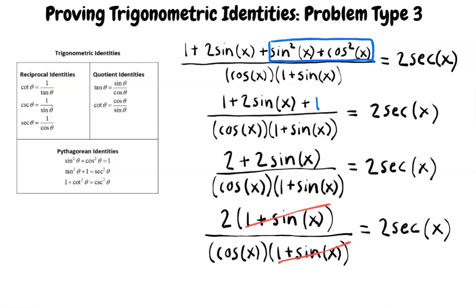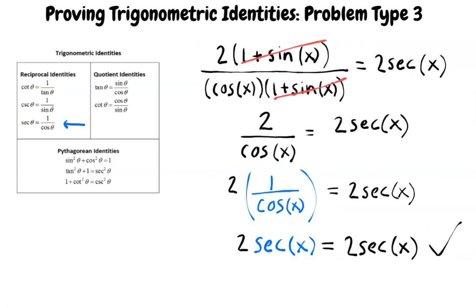What do you think is the next step? Oh, okay. We know from the reciprocal identities that secant of x equals 1 over cosine x. So we can do that substitution and get 2 secant x.